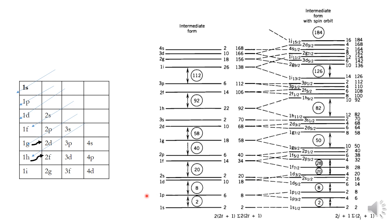For convenience, we can follow the configuration order of levels: 1s, then 1p, then 1d, then 2s, then 1f, then 1g. After 1g, it goes directly to 2d, then 3s, then 2f, then 3p, then 1i, and so on.